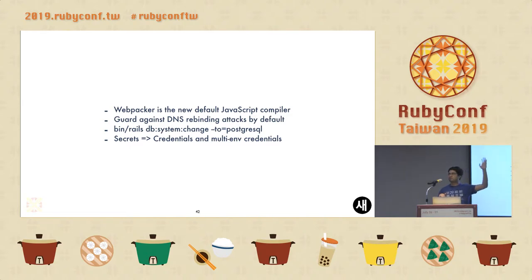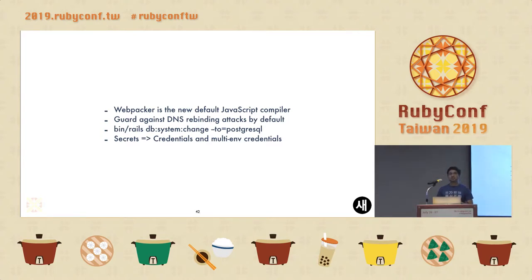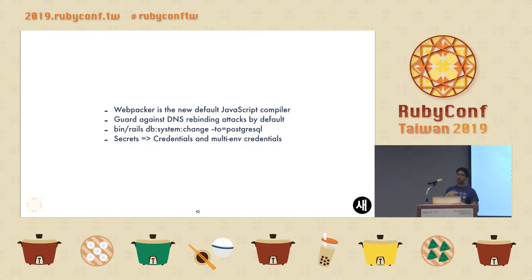How many of you have used secrets or credentials? Secrets was added in 4.2 or something, and it was pretty confusing how secrets and encrypted secrets were being used. It has been phased out — it's still supported but deprecated. Now everything in new applications should use credentials and encrypted credentials, which also support credentials for multiple environments.